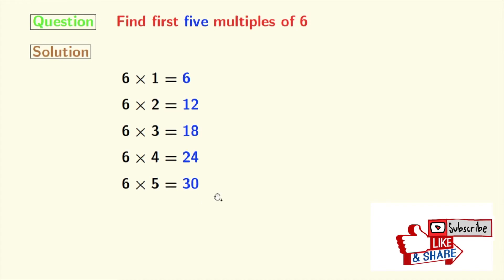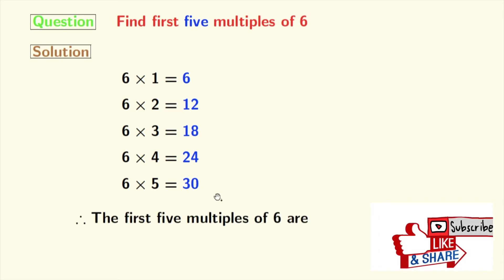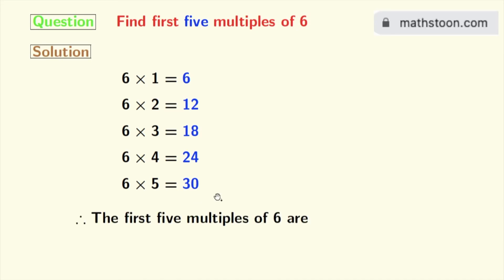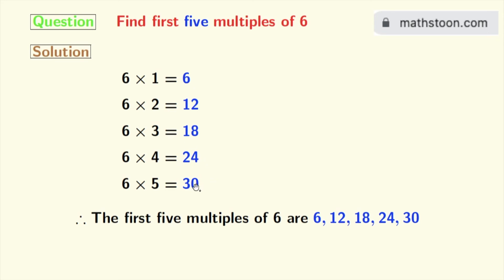So look, we have got all the first 5 multiples of 6, which are shown in blue color. These are 6, 12, 18, 24, and 30.